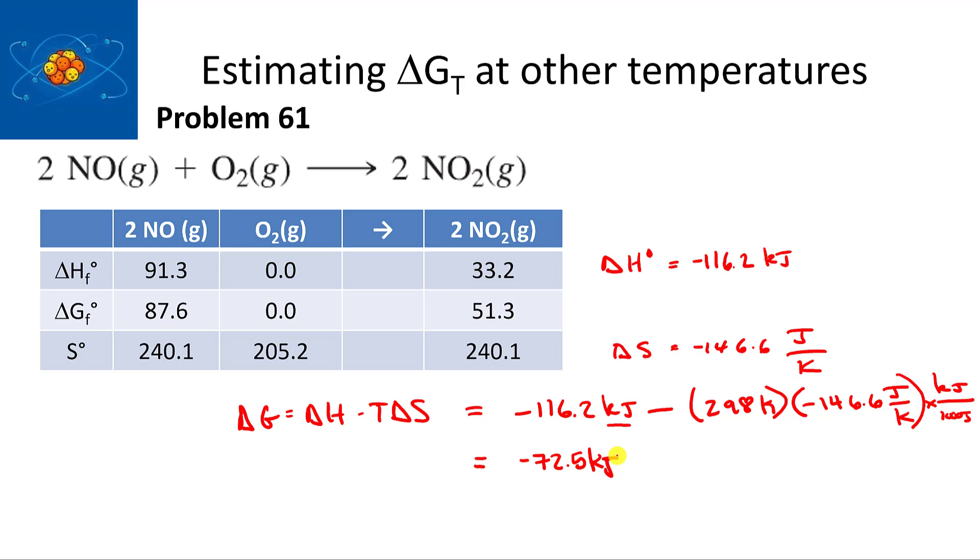So at 25 degrees Celsius, delta G is minus 72.5 kilojoules. If delta G is negative, that means the reaction is spontaneous.